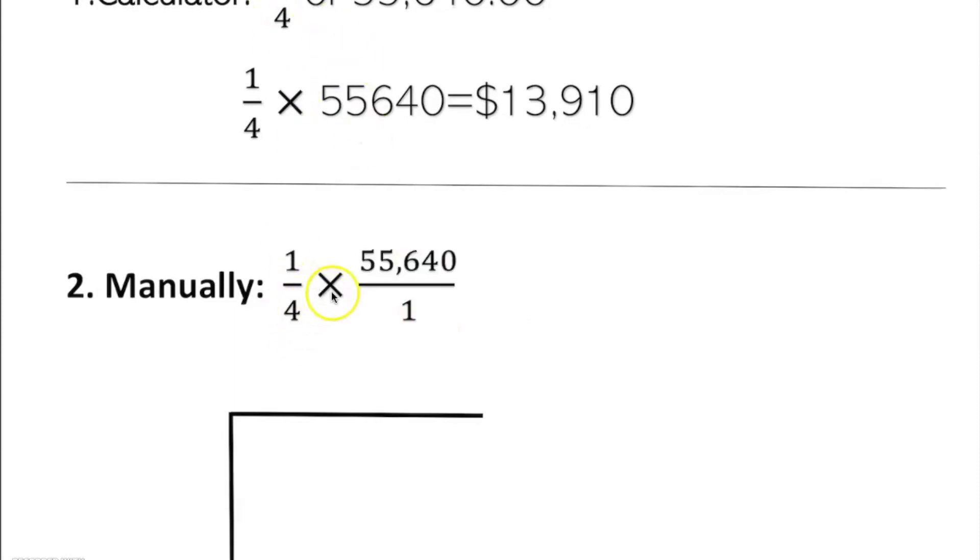Again, one-fourth of means multiplication. If there is nothing we can put down 1, so it's a fraction. We multiply it across: one times that. We multiply it across, so it's going to give us 55,640 over 4.